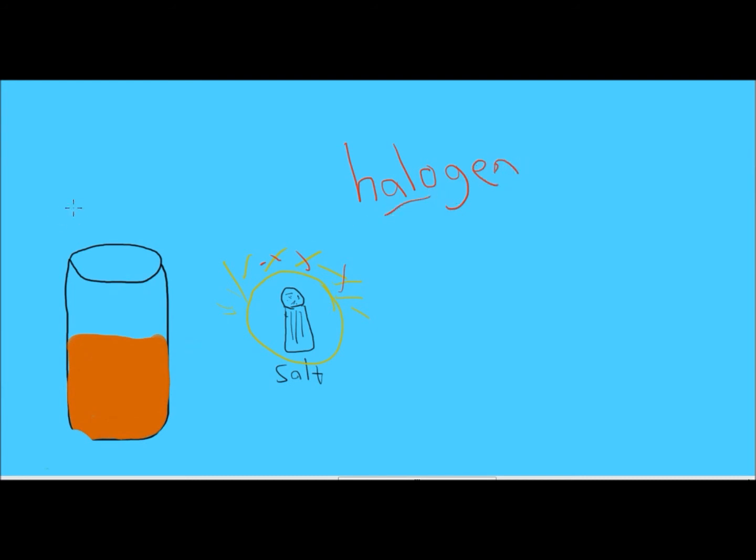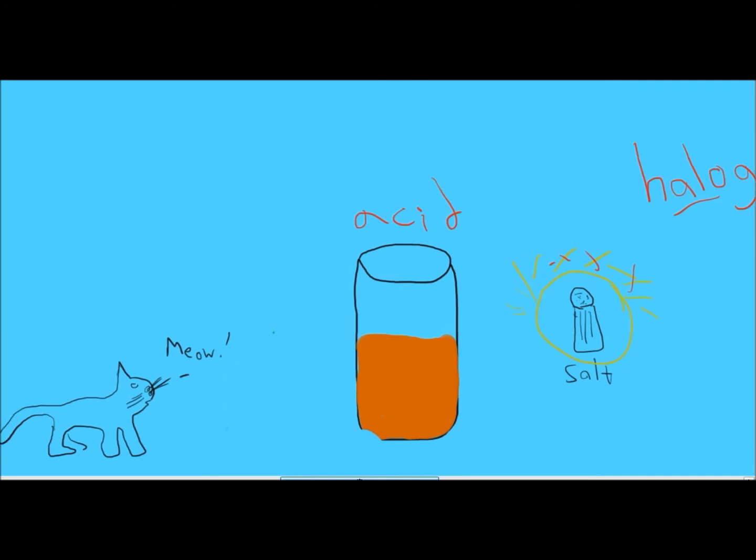Then I'll drink some orange juice, which is an acid. And while I drink this orange juice, I'm going to say hi to my cat. Remember that hi is in hydrogen, which is an H plus ion, which is what's given off by acids during a chemical reaction.